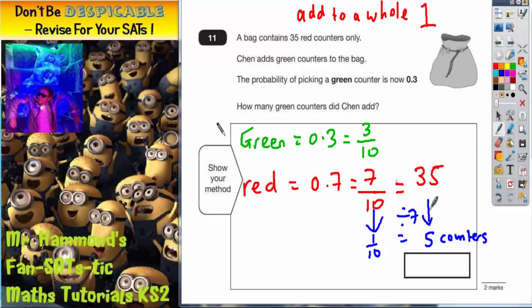So if 1 tenth is 5 counters, we can now go back to the green and see what 3 tenths is. If 1 tenth is 5 counters, 3 tenths must be 3 lots of 5 counters. So 3 tenths equals 3 times 5, which is 15 counters. So there must be 15 green counters in the bag. So your answer is 15.